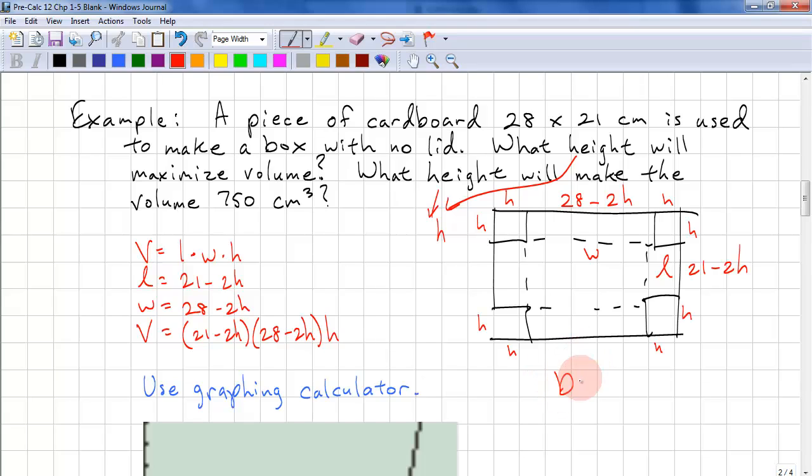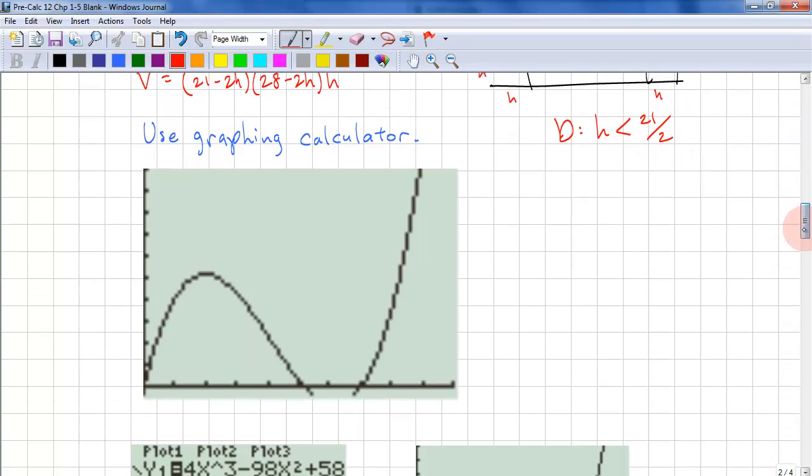So our domain, h is less than 21 over 2. Okay, now we can proceed to use our graphing calculator.